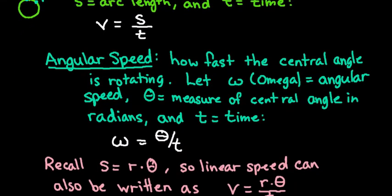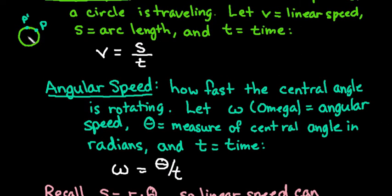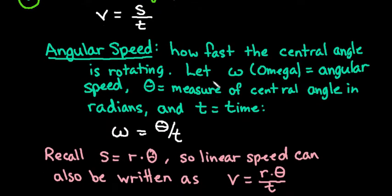Another thing that we deal with is the angular speed, and this is basically telling you how fast the central angle is changing over time. So the central angle would be like if I started here, and how much it's changing over time. How much is it rotating here in the center? And so for this one, we use omega to represent the variable for the angular speed. Theta is going to be the measure of the central angle in radians. It does have to be in radians, so make sure that you pay attention to that.